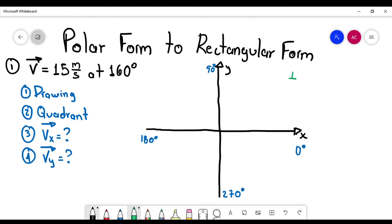The first quadrant, the second quadrant, the third quadrant, and the fourth quadrant. Okay, so next, what I'm going to do is to locate this vector at 160 degrees.